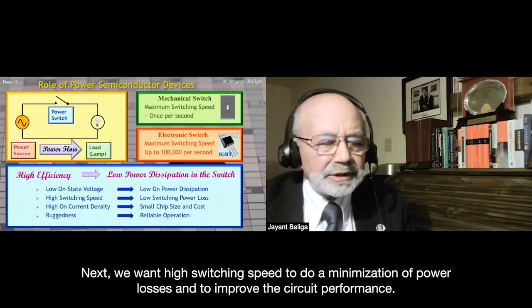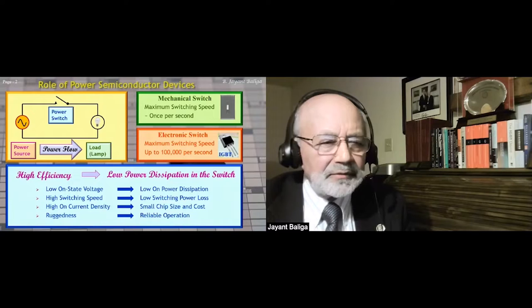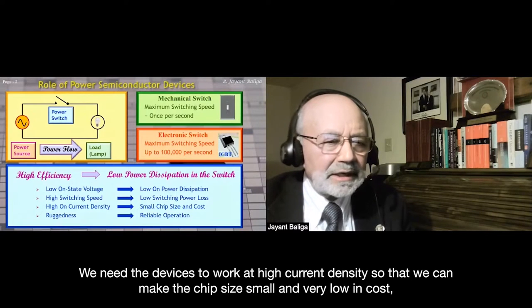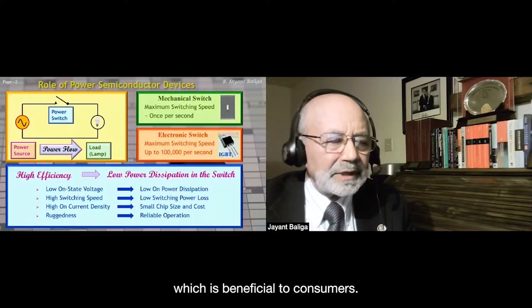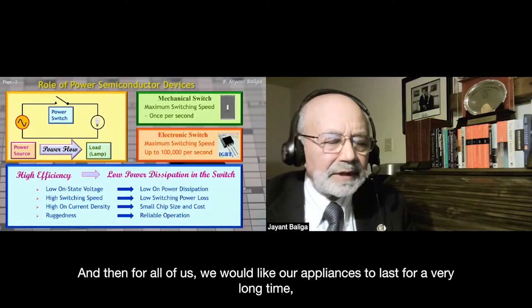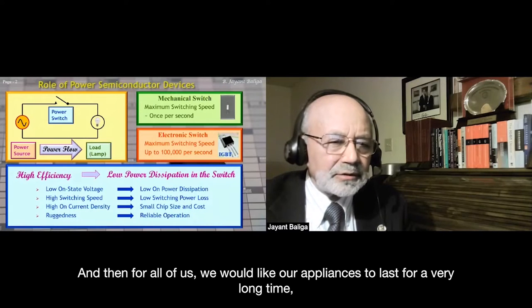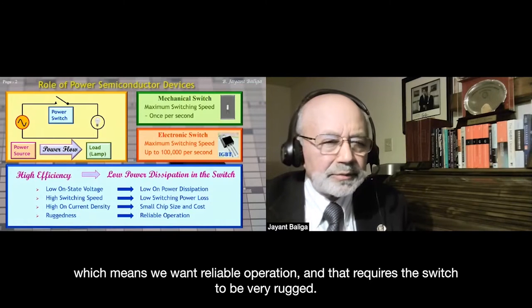Next, we want high switching speed to minimize power losses and improve circuit performance. We need devices to work at high current density so that we can make the chip size small and very low in cost, which is beneficial to consumers. And we want reliable operation, which requires the switch to be very rugged.